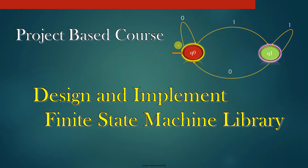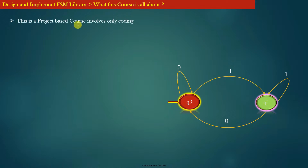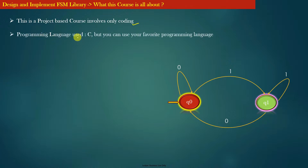Hi guys, welcome to my new course, which is a project-based course. In this course we will learn how to design and implement a finite state machine library. This is a project-based course which involves only coding — there is absolutely minimum or no theory at all. I will explain the concept and you need to implement it right away. The programming language used is C, but you can use your favorite programming language. I will demonstrate example code in C, but if your favorite language is Python, Java, or C++, you can implement the same concepts there.